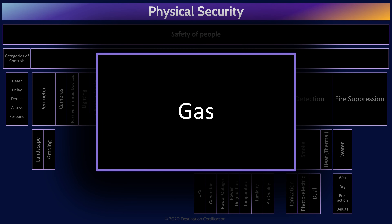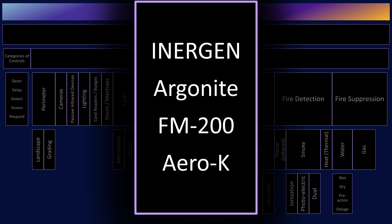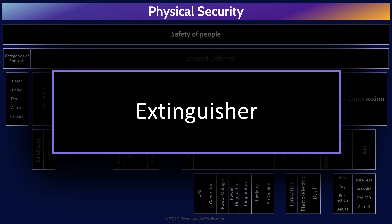Gas-based systems use various types of gas to put out fires. Some displace oxygen from a room — no oxygen equals no fire, but also no human life — so it is critical to have safety systems in place allowing people to exit before the gas is released. Another method is to interrupt the chemical exothermic process of fire. The four major types of gases to know are Inergen, Argonite, FM-200, and Aero-K. One to highlight is Aero-K, which is reportedly safe for equipment and apparently also safe for people.